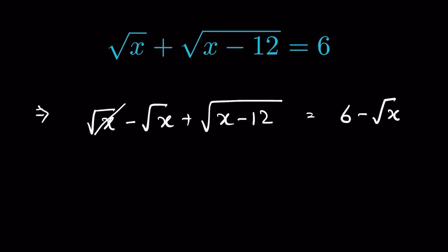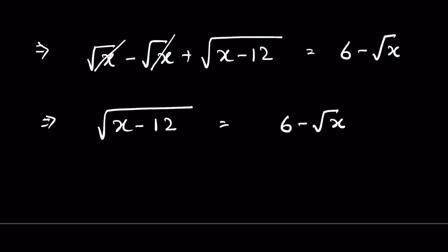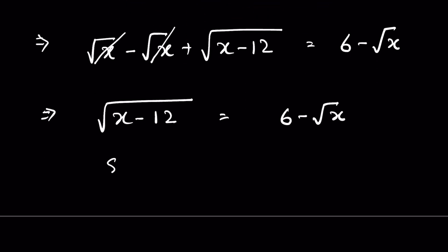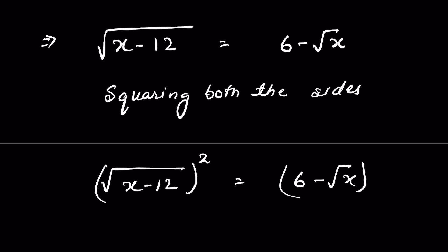The plus square root of x and minus square root of x cancel, so we have square root of x minus 12 equals 6 minus square root of x. Now let's square both sides: the square root of x minus 12, whole squared, equals 6 minus square root of x, whole squared.